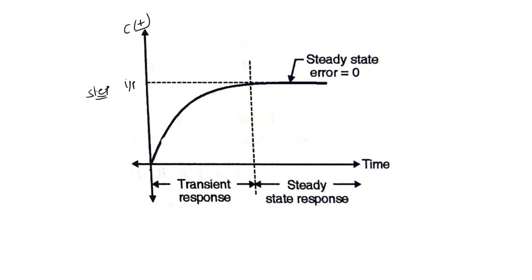The input signal is our desired output which we want to obtain. If we are giving a step input to the system, you can see here the output response — the graph showing the relation between the output of the system with respect to time. That is our time response analysis. Here you can see that the response of the system is increasing and then it becomes constant, so I divide this graph into two portions.